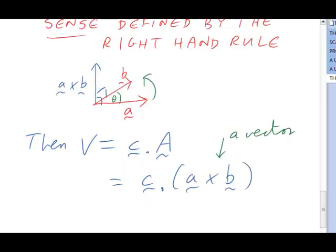The volume is the dot or scalar product of the sloping side c with another vector, which is the cross product of the two vectors in the base, A cross B.